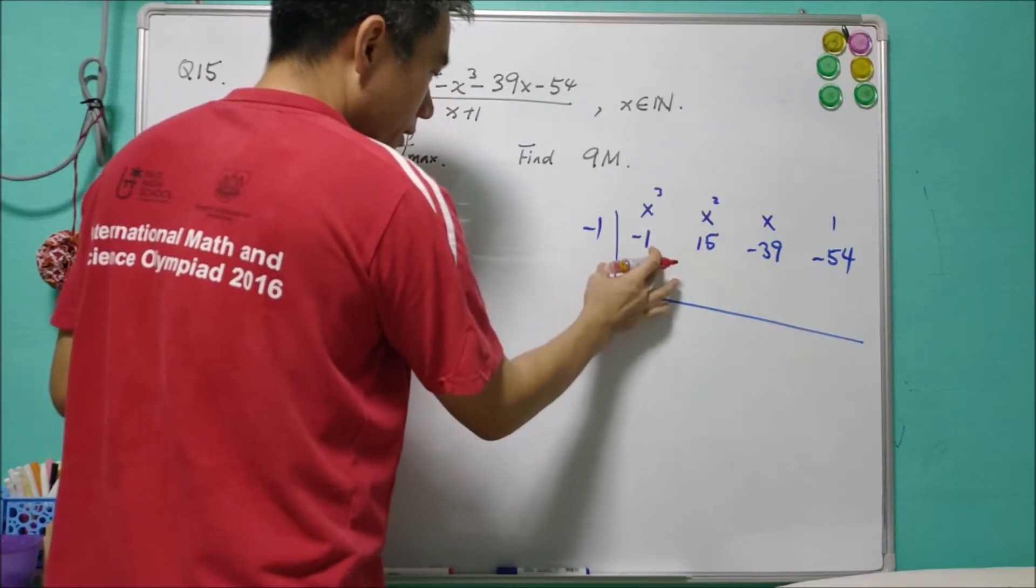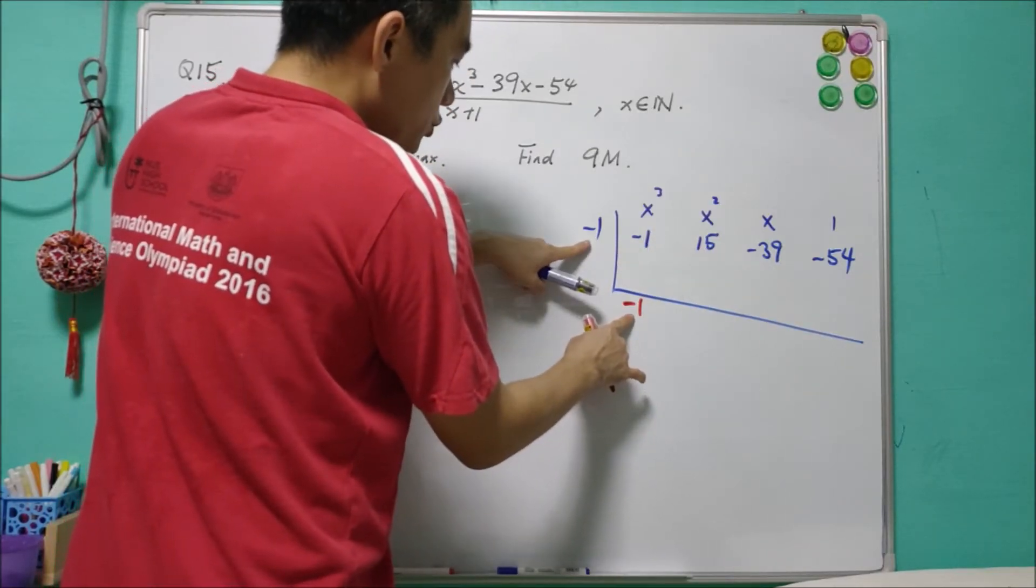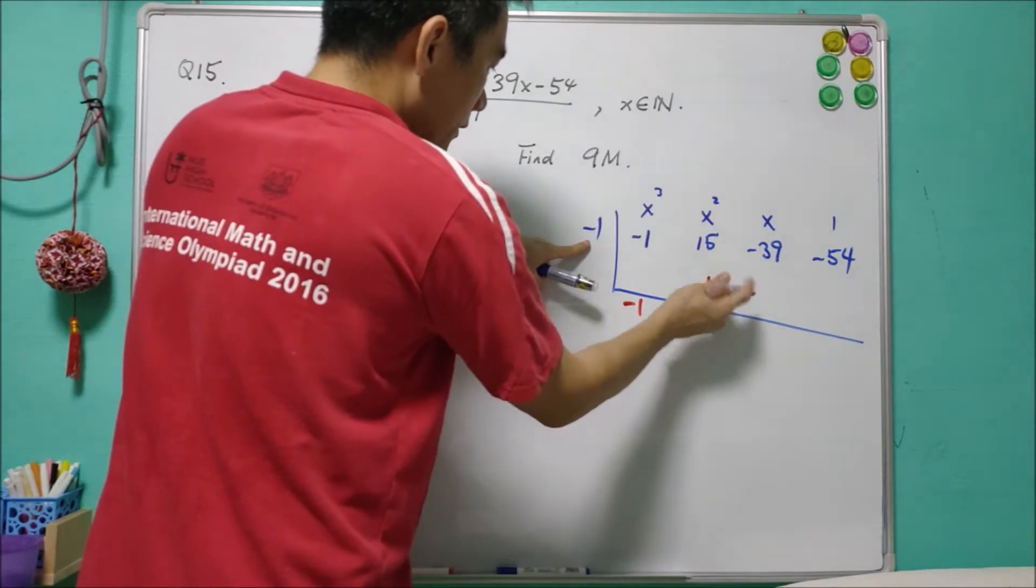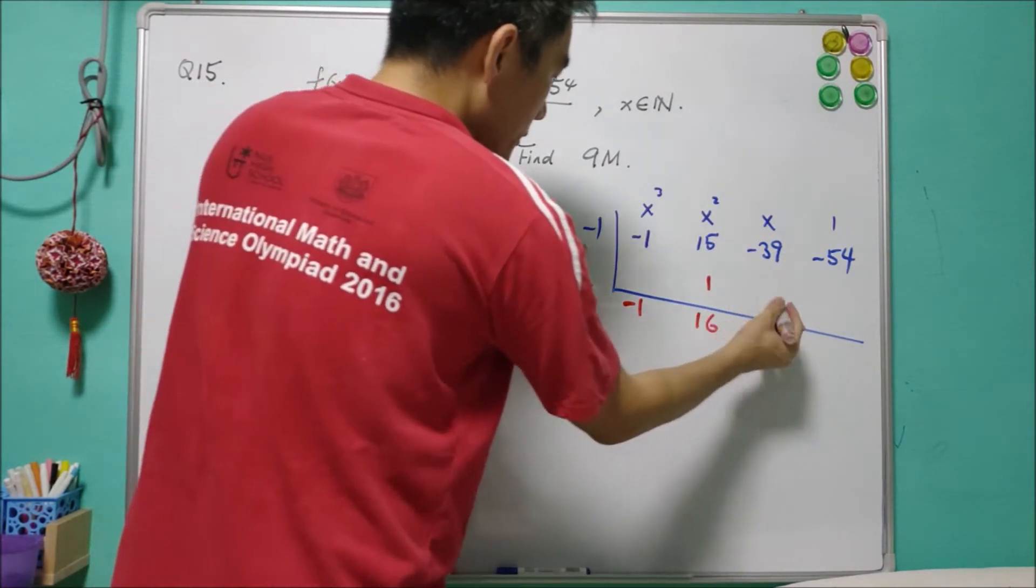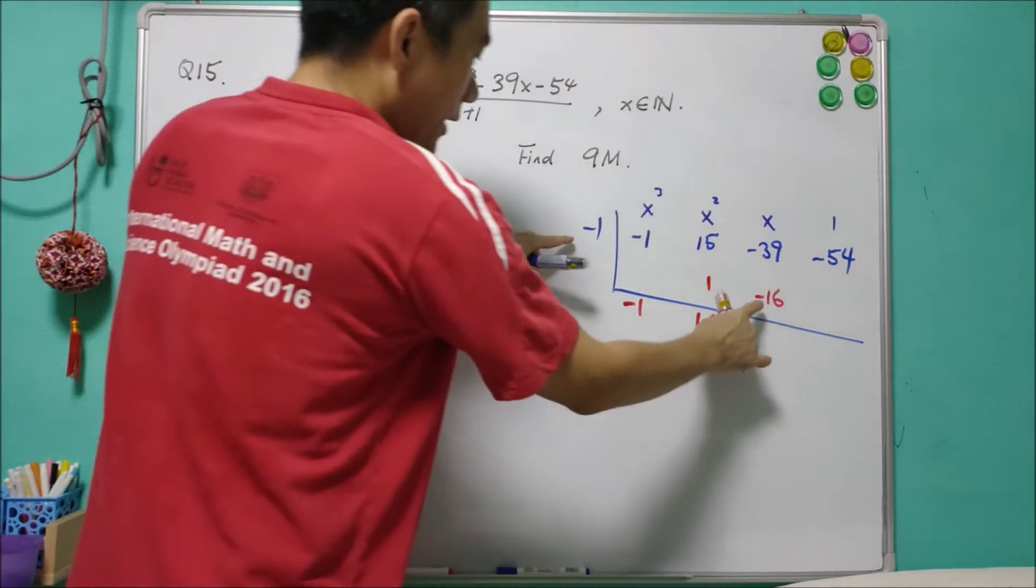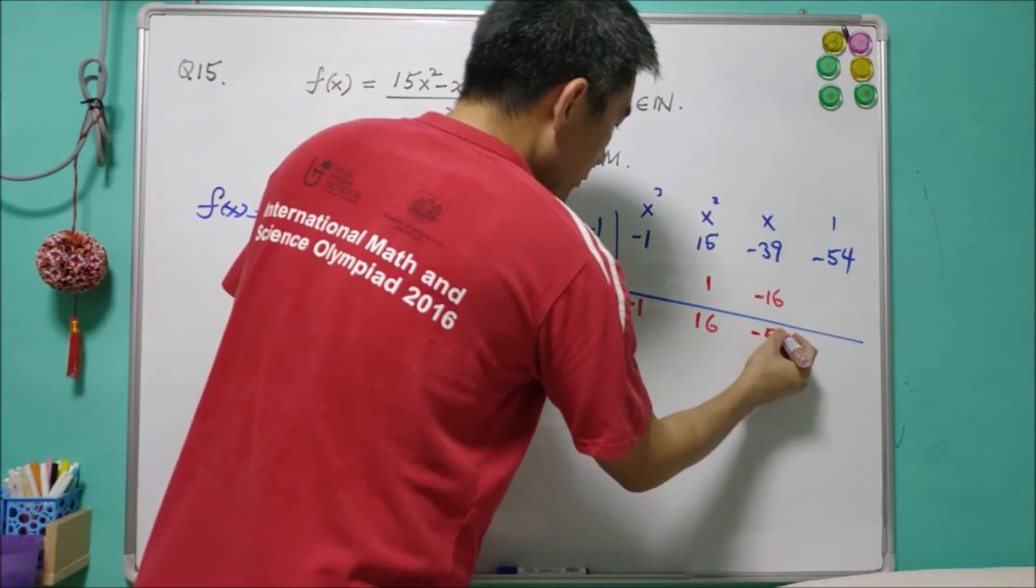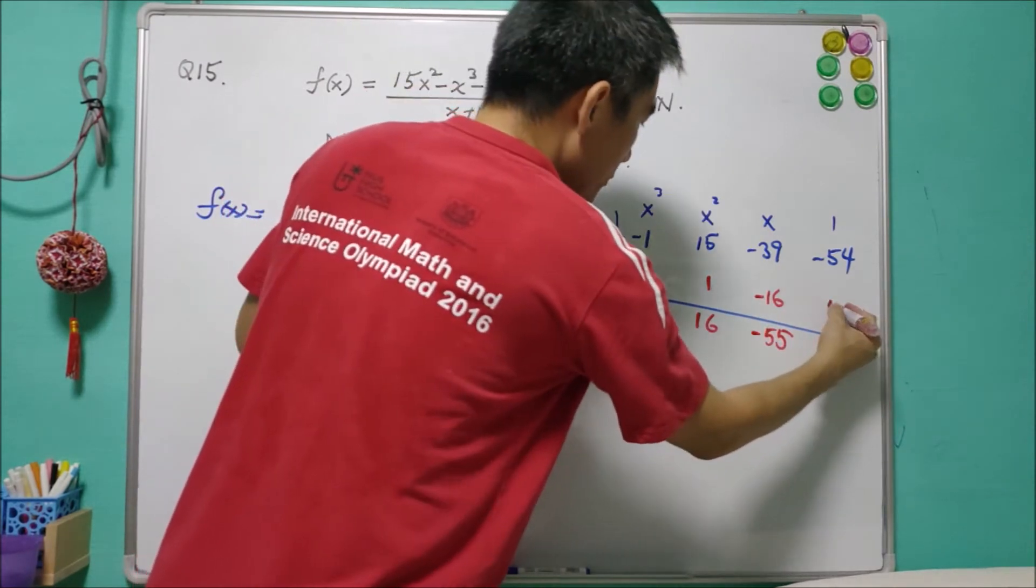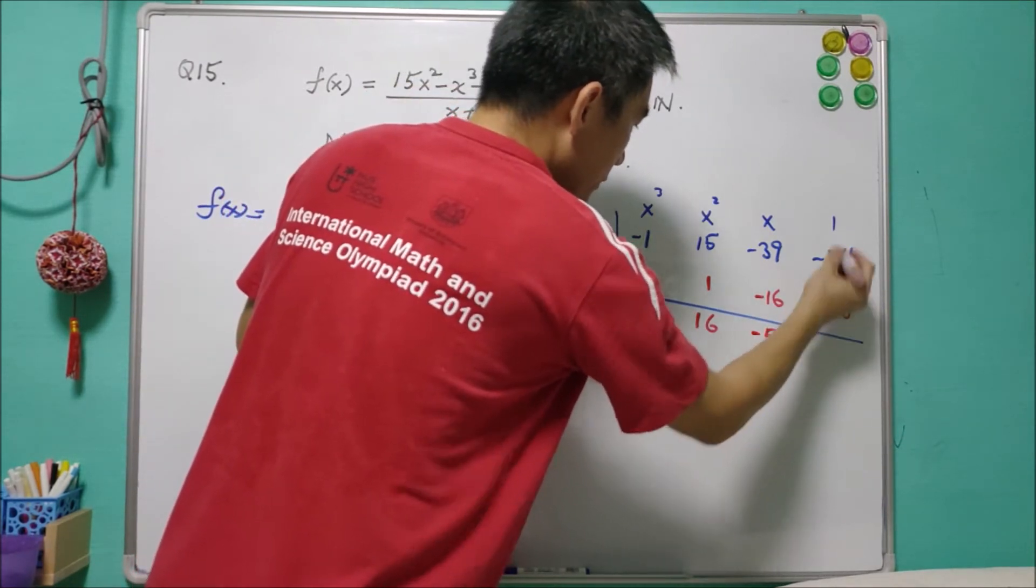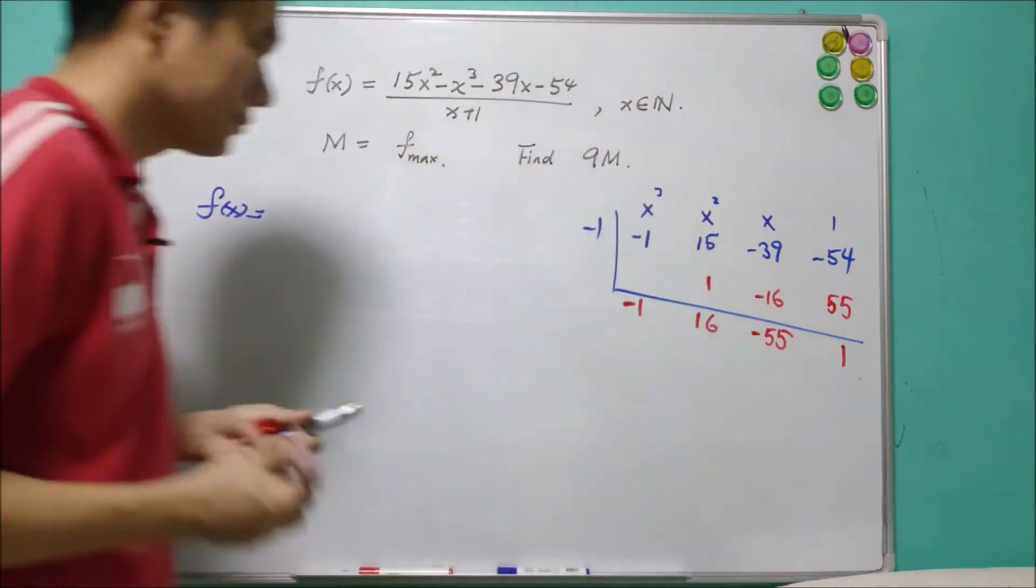The first thing we just follow. We multiply these two together, we get 1. And we add these two together, 16. Multiply, negative 16. Add together, negative 55, not 54. Multiply together, 55, and add together, that is 1.